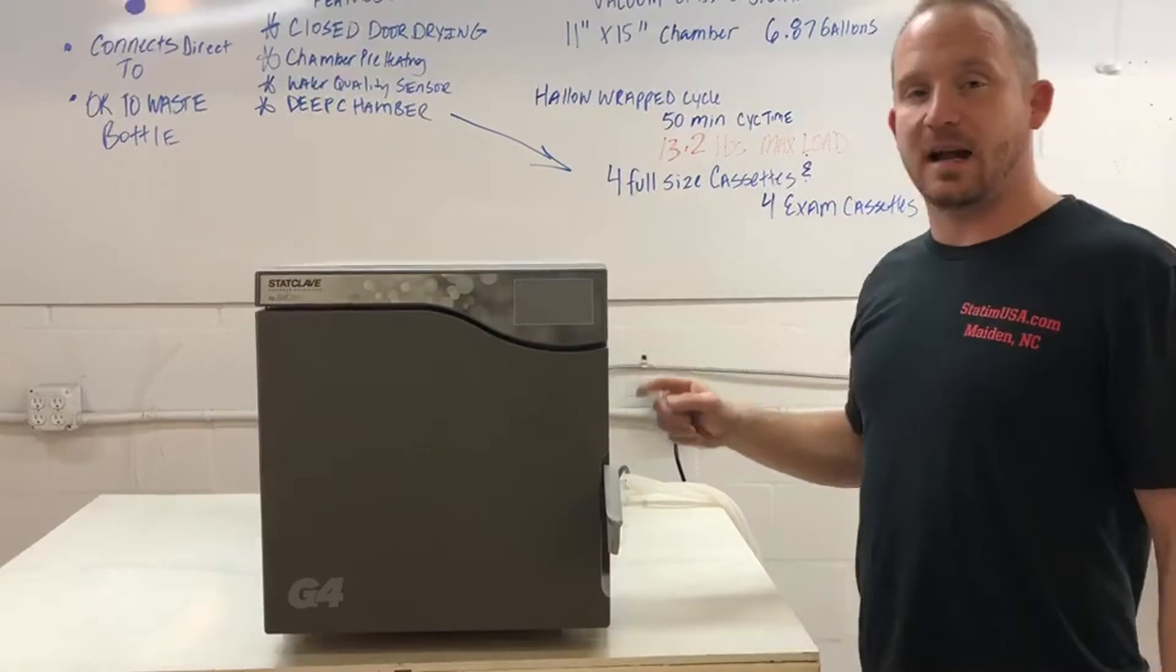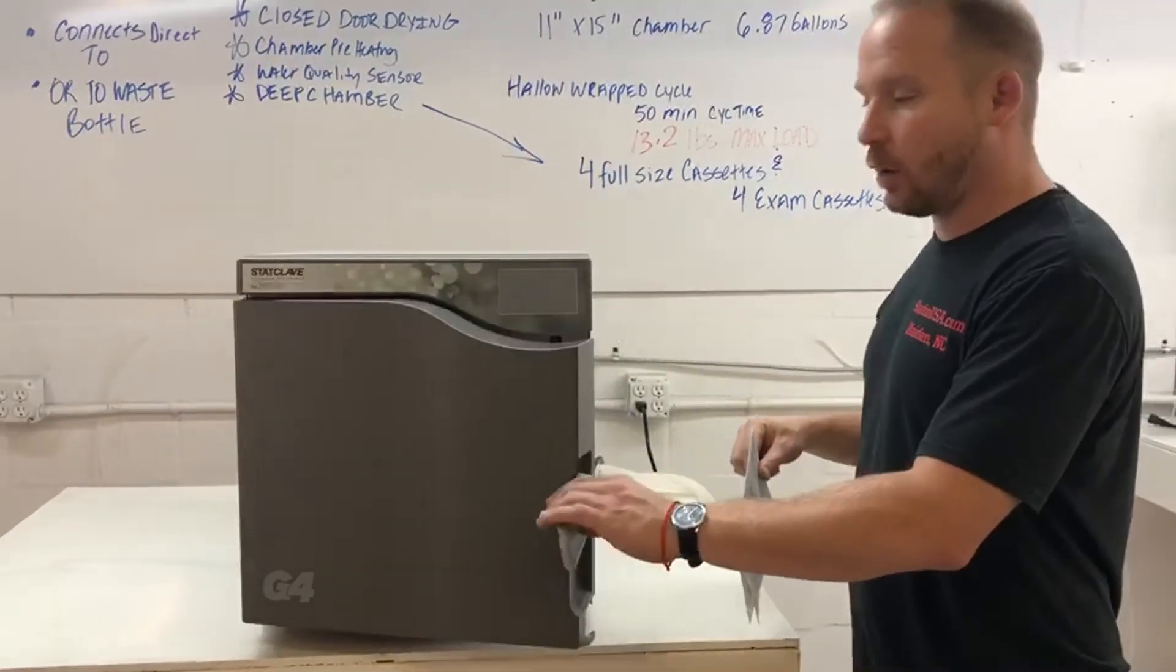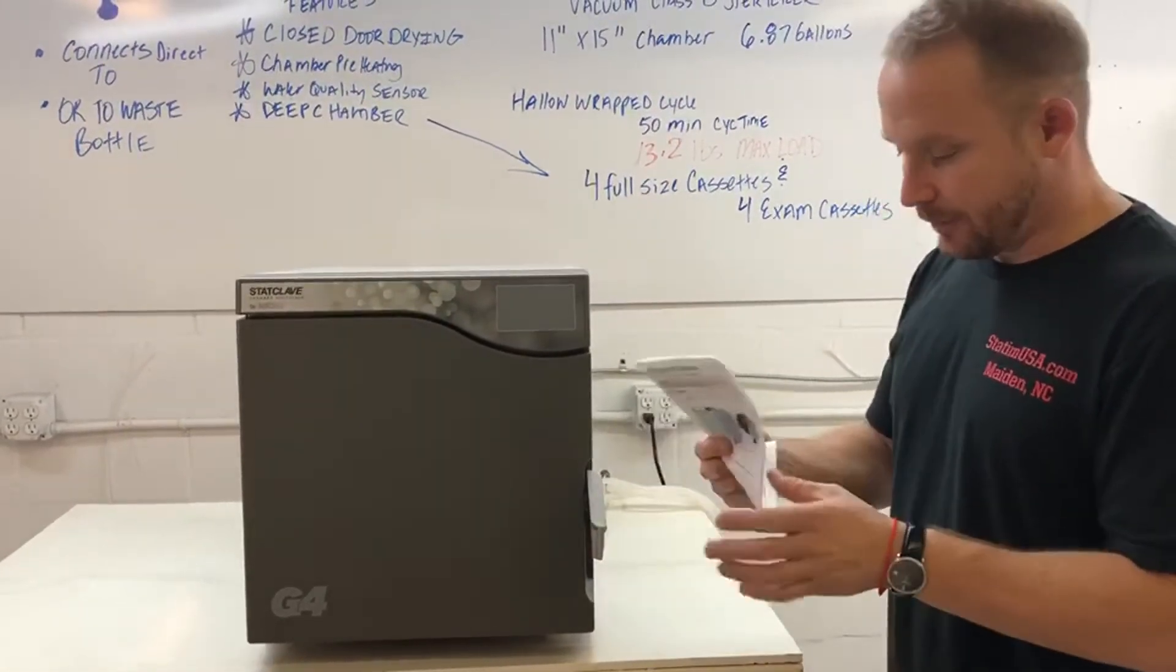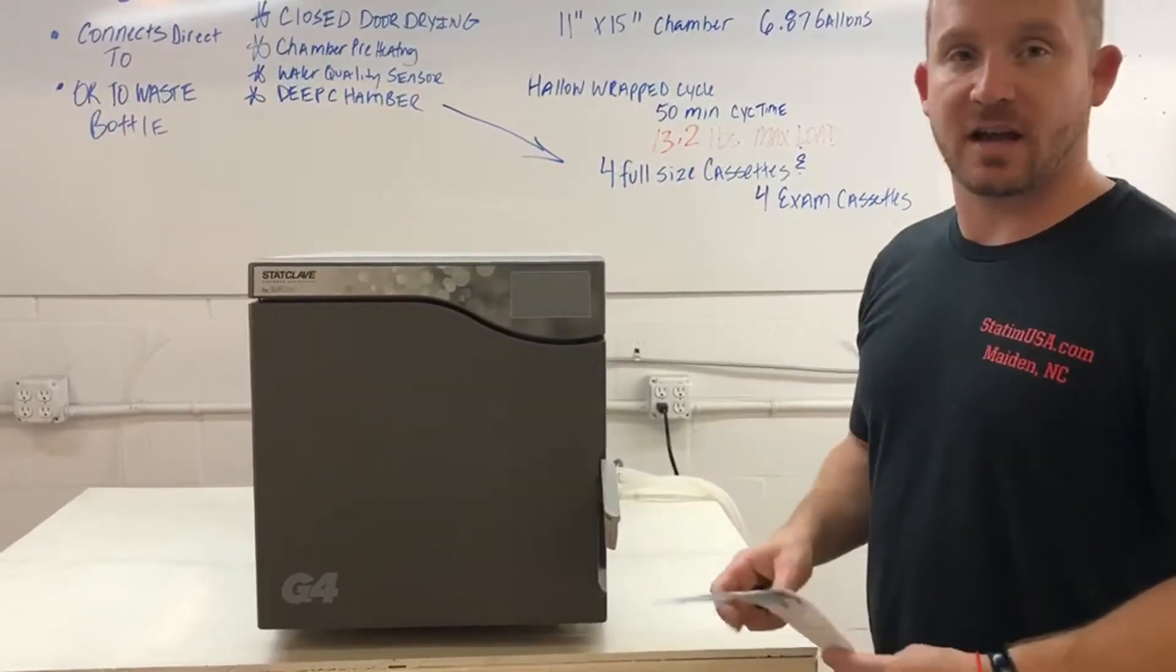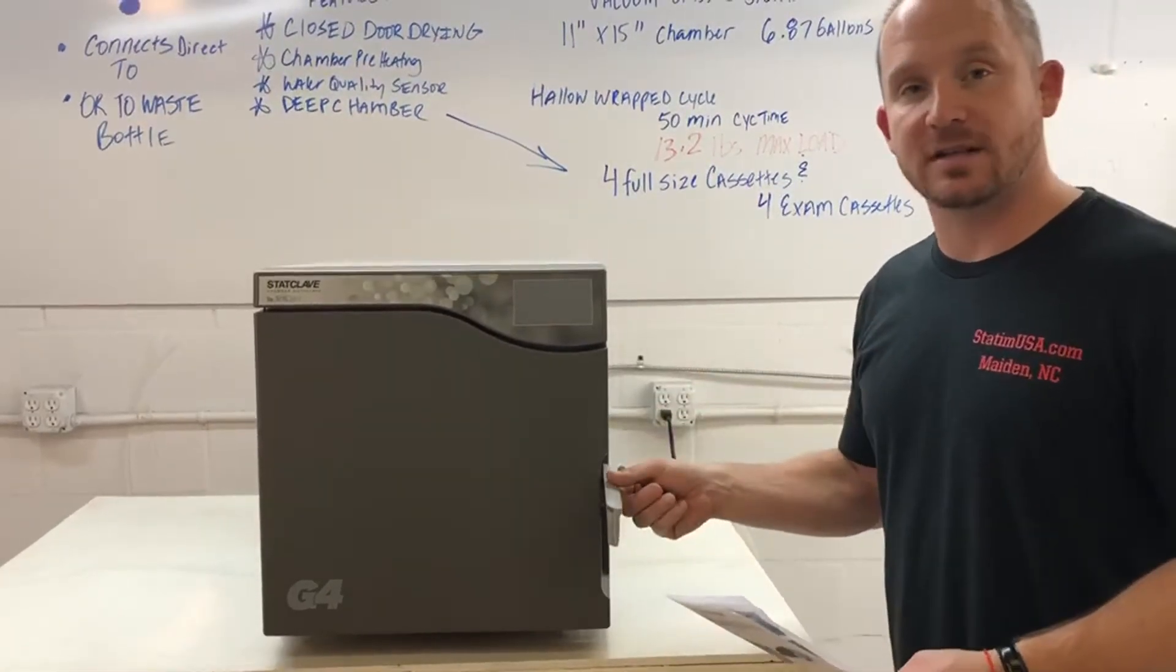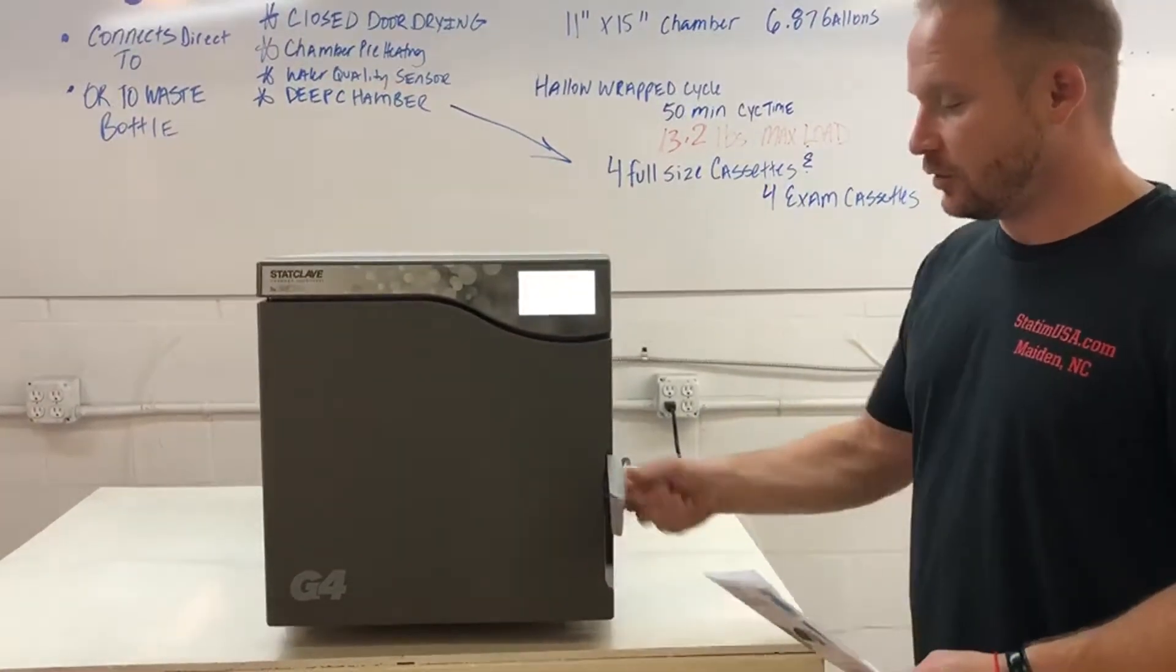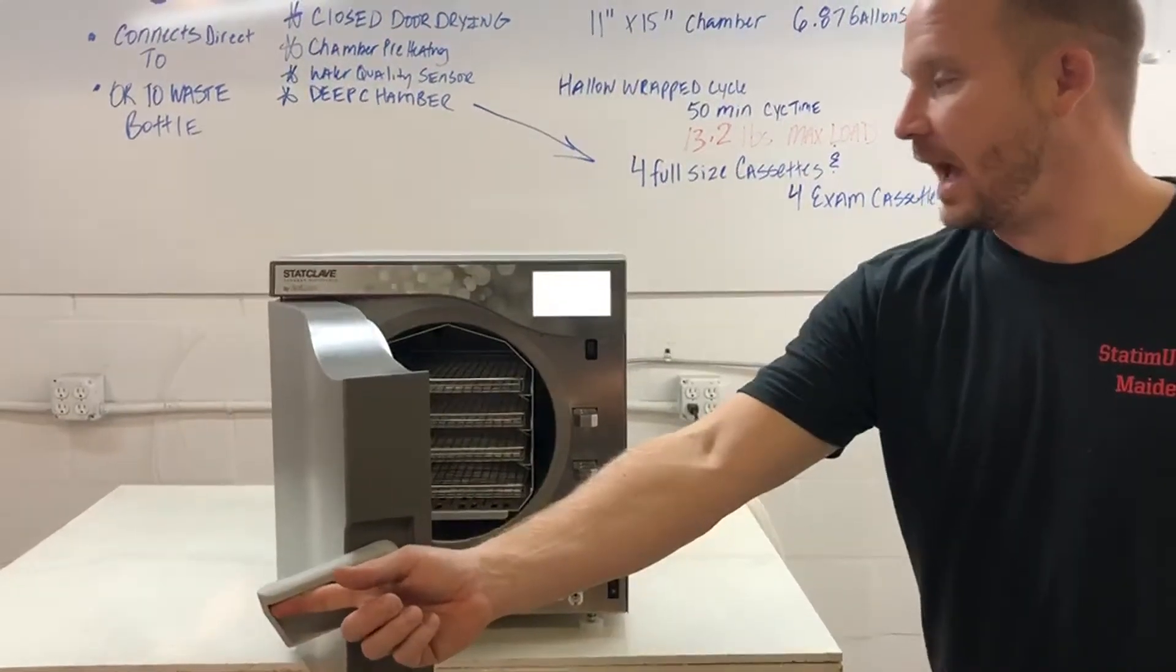So upon setup, two things are very important. One, keep the door open when you initially turn the unit on. And two, I'll refer to the diagram, we have to run a hollow unwrap cycle. So again, make sure that the door is open when you power the unit on, like so. Door open. That way it can grab the atmospheric pressure.